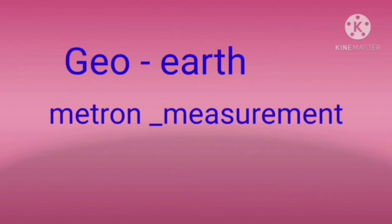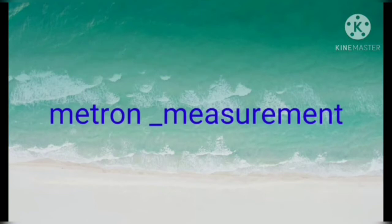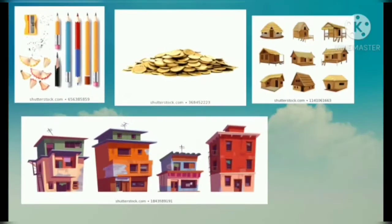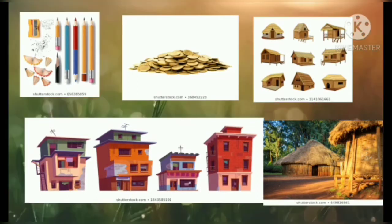Children, in our daily life we can see many objects having different shapes, measurements, lengths, etc. Examples include tree, ball, boxes, chair, paper, pencils, coins, buildings, huts, etc. All such objects have different shapes, and all these are based on geometrical ideas.